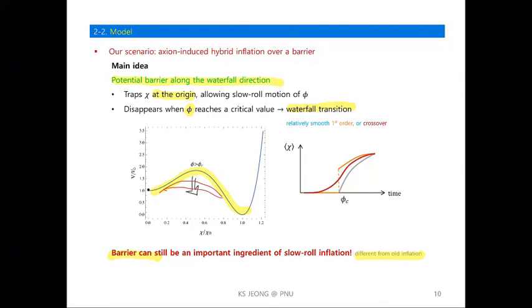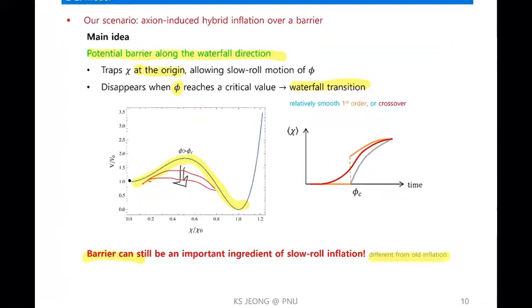The speaker addresses the question about bubble nucleation: bubbles of true vacuum can be nucleated at the end of inflation. However, that is at the end of inflation, so although bubbles can be nucleated, they can generate inhomogeneity only at very small scales. This is likely not a problem, but it would give some interesting cosmological effects. We are now examining such effects — some sizable gravitational waves may be produced from the bubbles.